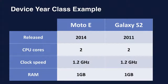The challenge is how do we actually test and reason about 10,000 devices? They're all very different. The way we reason about them is we came up with an approach called Device Year Class. No matter when the device was produced, it's the year at which that device, with those characteristics, would have been the flagship device on the market.